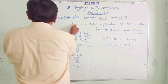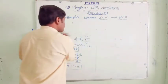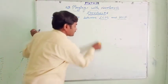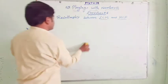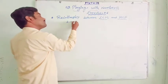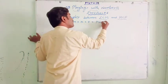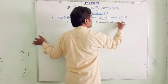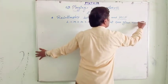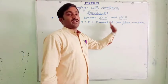So the relation between LCM and HCF is: LCM × HCF = product of two given numbers. That is, first number × second number. In all three cases, this relation held true.